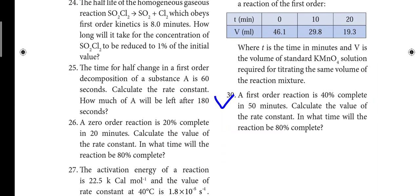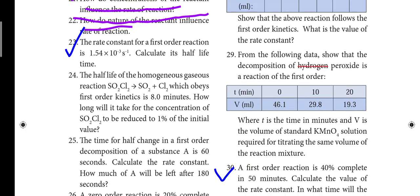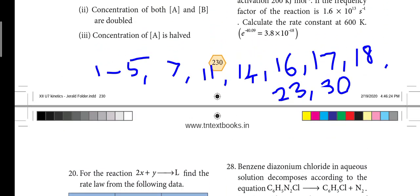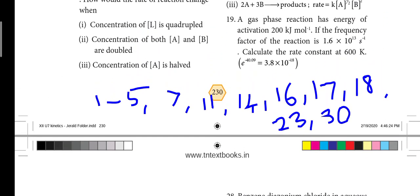Next, 30 — study that too, even if not the most important. The important question numbers to study are: 1, 2, 3, 4, 5, 7, 11, 14, 16, 17, 18, 23, 30. Note these down.